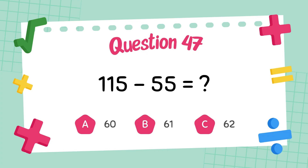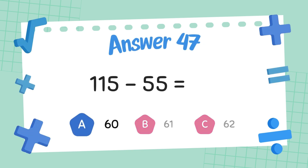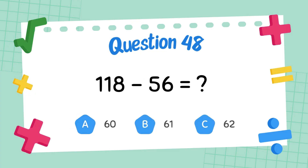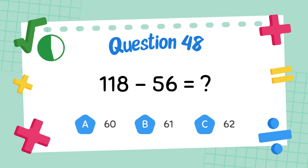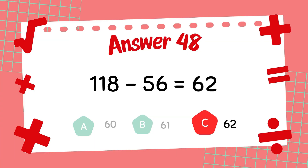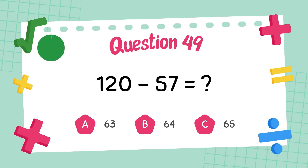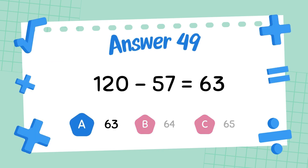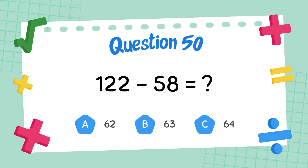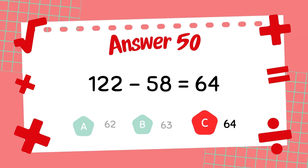What is 115 minus 55? The answer is 60. What is 118 minus 56? The answer is 62. What is 120 minus 57? The answer is 63. What is 122 minus 58? The answer is 64.